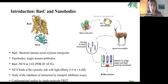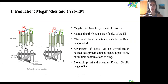A structure of BASC was solved in complex with nanobody 74, with a resolution of 2.9 Angstroms. Nanobody 74 binds at the cytosolic site of BASC with high affinity. In order to find other conformations of this transporter, studies of the site of interaction by transport inhibition assays have been done, and also conformational studies by single molecule FRET using different nanobodies.